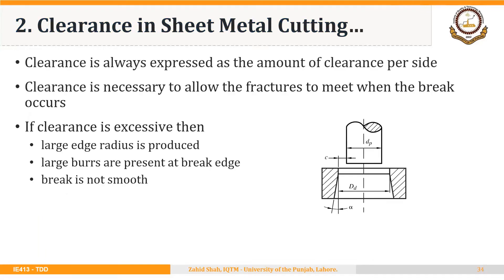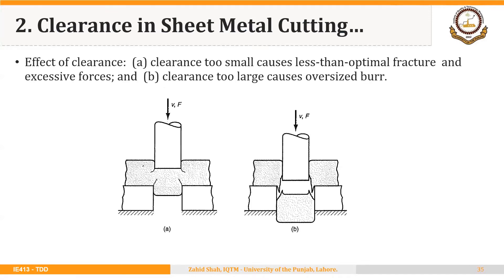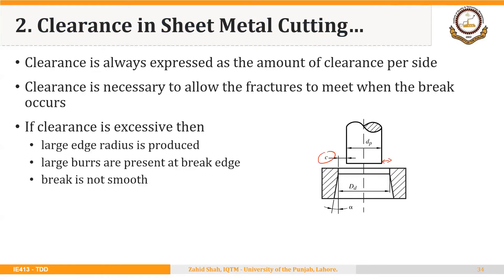Clearance is always expressed as the amount of clearance per side, so clearance must be given on both sides. Whenever reading the value of clearance, that means it is clearance to be given on each side. Clearance is necessary to allow the fractures to meet when the break occurs. If clearance is excessive, a large edge radius is produced, large burrs are present at the break edge, and the break is not smooth.